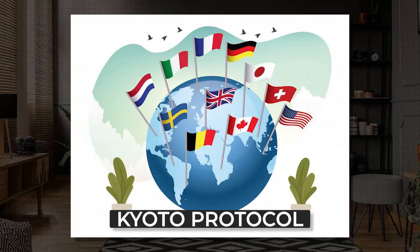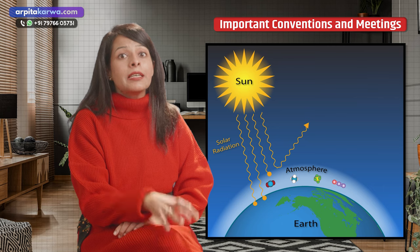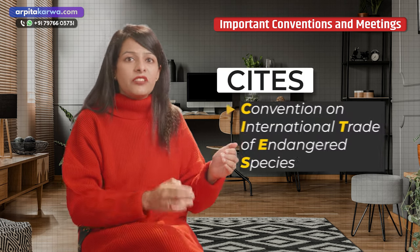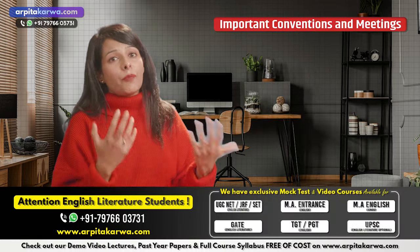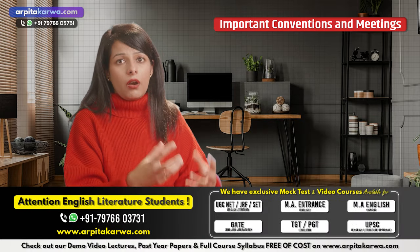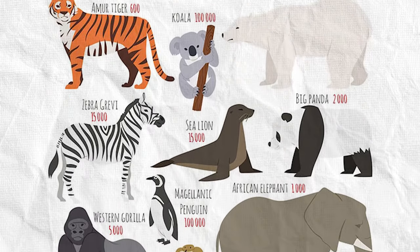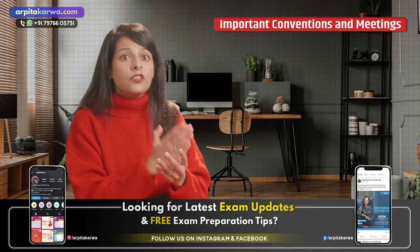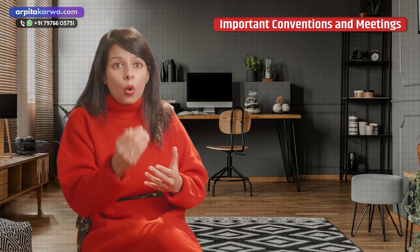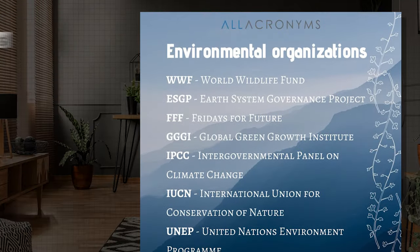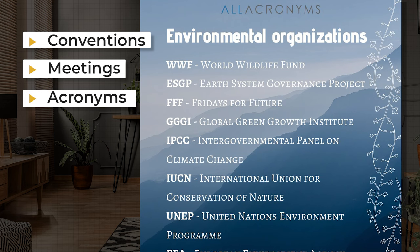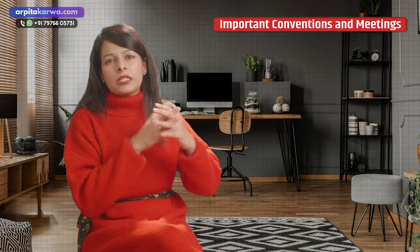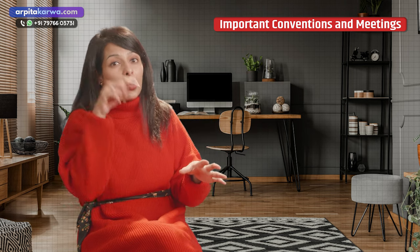The Kyoto Protocol, which was signed recently, involves countries trying to reduce the emission of greenhouse gases at a good pace. Apart from that, there are various acronyms like CITES — Convention on International Trade of Endangered Species — which specifically talks about endangered species and stopping their trade. Endangered species are on the verge of extinction, and CITES focuses on how they should reproduce to maintain ecological balance. They'll mostly ask from popular conventions but also from recent ones.